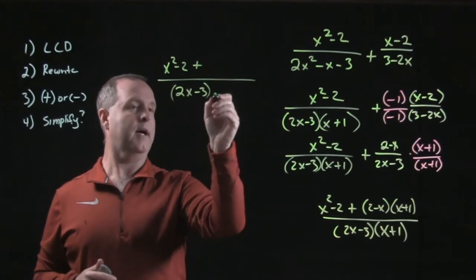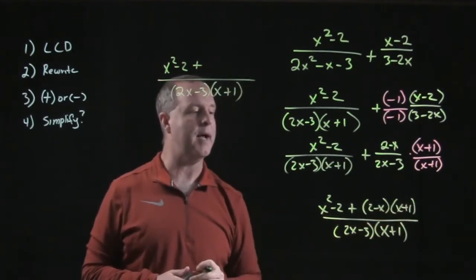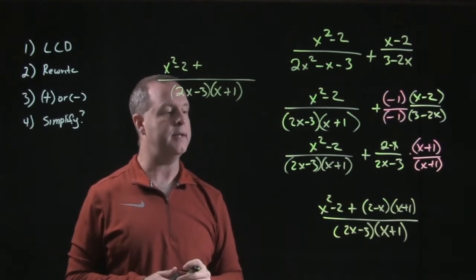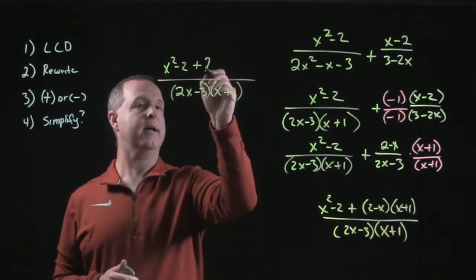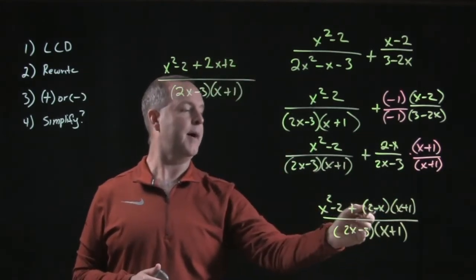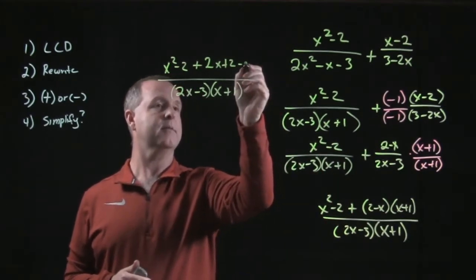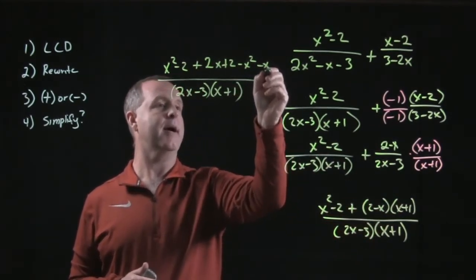I need to multiply (2 - x) times (x + 1). First term times first term gives me 2x. 2 times 1 gives me 2. Minus x times x gives me minus x². Then minus x times 1 gives me minus x.